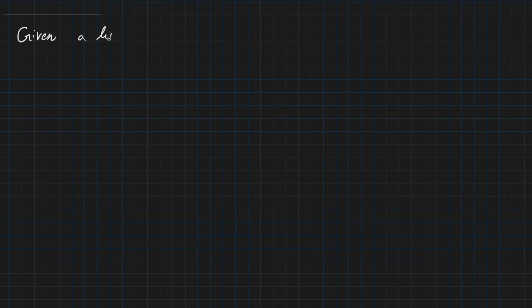So given a linear map f from v to w — you can usually think of the real numbers squared or cubed when you are seeing these vector spaces v and w, but to be general here we are working with v and w.